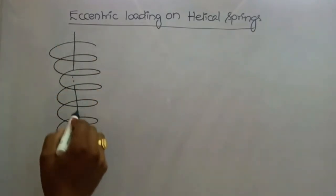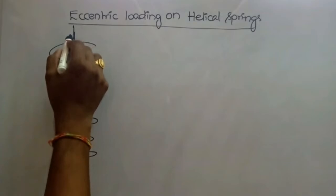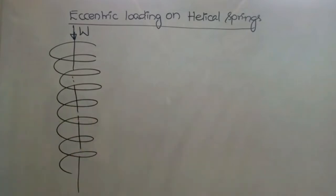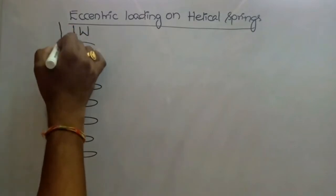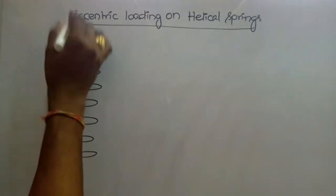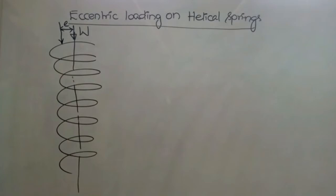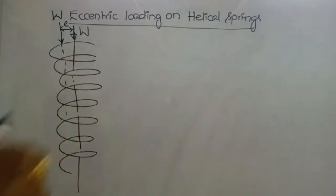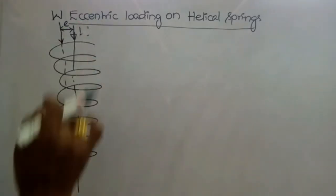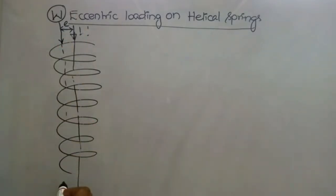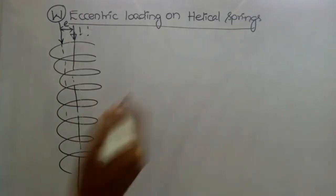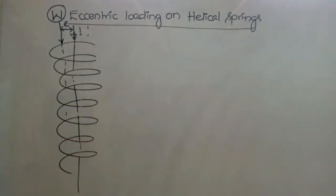If the load is applied exactly at the center, the deflection of all the coils of the helical spring will have uniform stress. But if the load is applied absent from the axis of the member — that offset is also known as eccentricity — then it is said to be an eccentric load. This eccentric load induces more stress on one side and less stress on the other side of the axis.